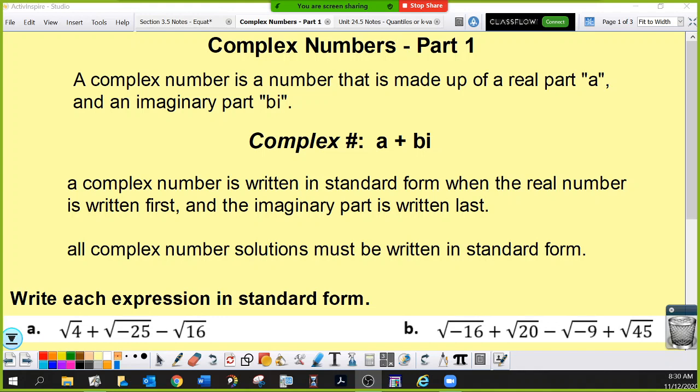Complex numbers, part one. A complex number is a number that is made up of a real part, which is the a part, and an imaginary part, which is the bi. Remember, the little i stands for the imaginary unit. I is how we denote the square root of negative one. The square root of negative one is the numeric value of i. This is what i equals.